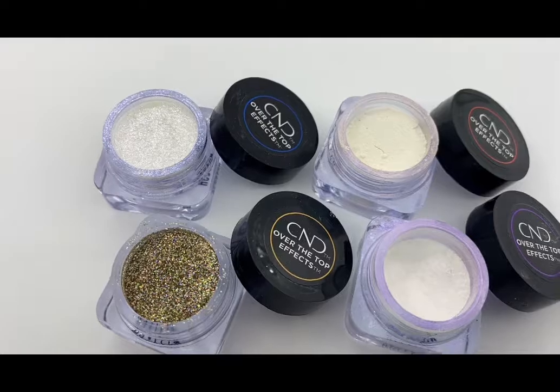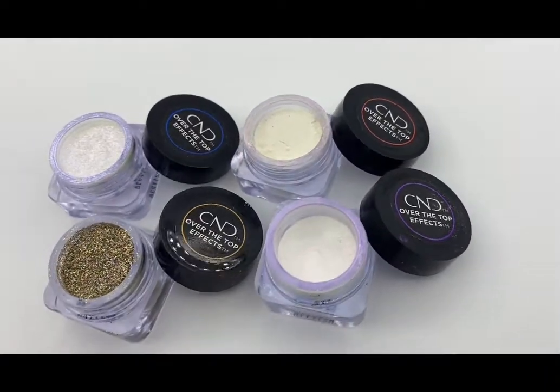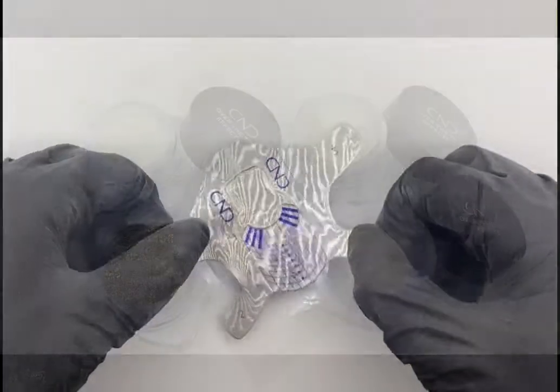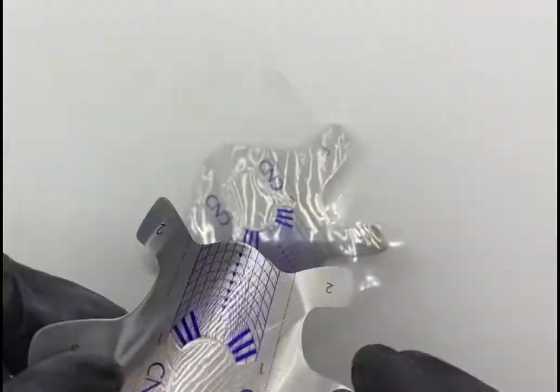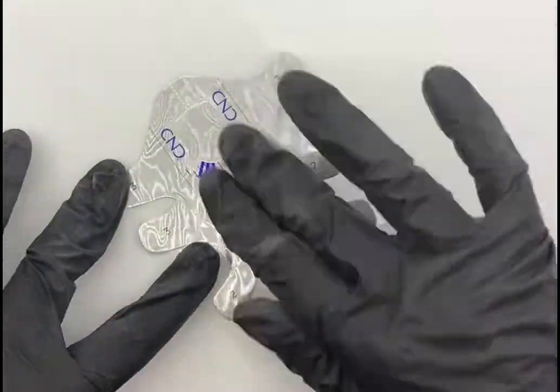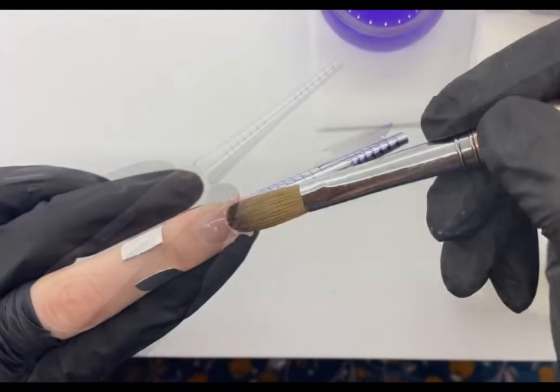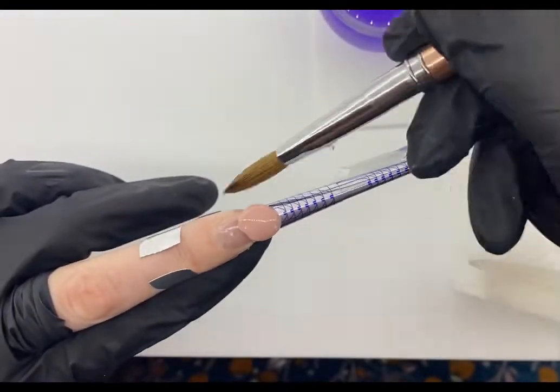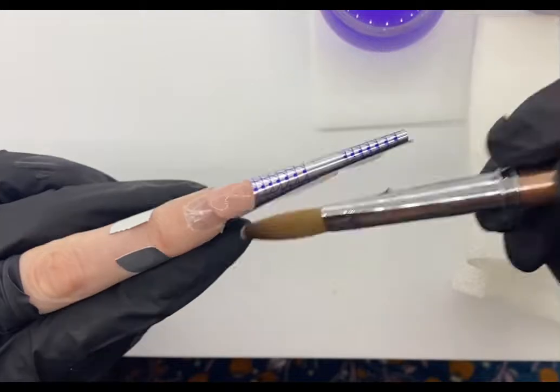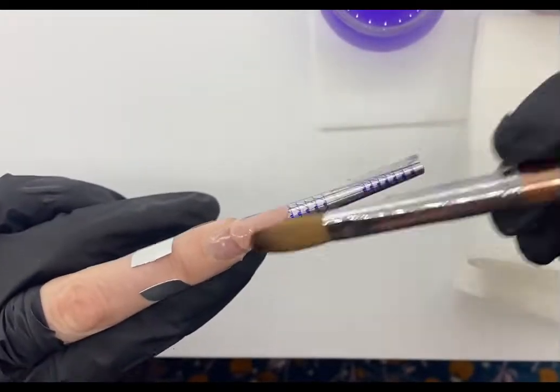I use C&D sculpting powder to create my nails today and over-the-top chroming powders for effects. C&D forms are extremely adaptable and I stuck two together to make my form longer. Handy hint, when fitting a form, fit it like you don't have a file. This way you'll get a fantastic C curve.